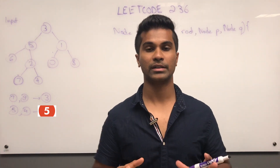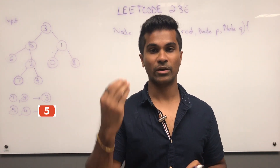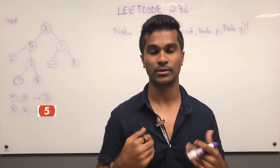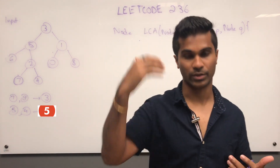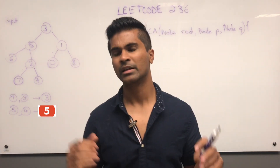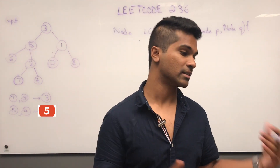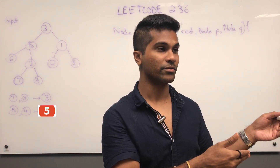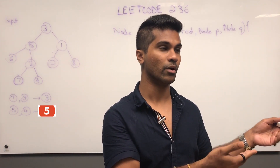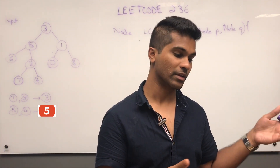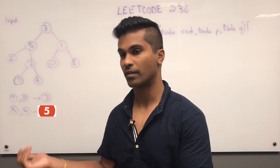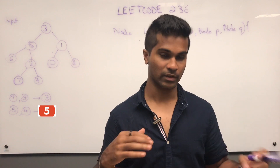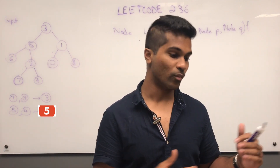The first thing is: anytime a node gains control of the recursive stack, it has to check whether or not it is equal to one of the target nodes. If it is, it returns itself. If a node is not one of the target nodes, it asks its left and right children recursively. If there's a target node found in the left child and a target node coming from the right child, then that node — the parent of both — is the least common ancestor.